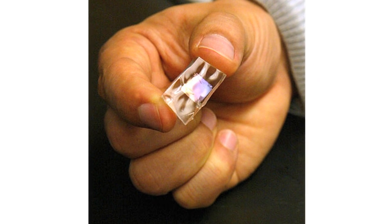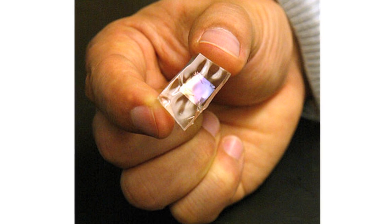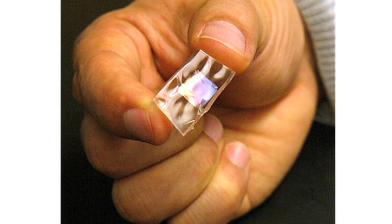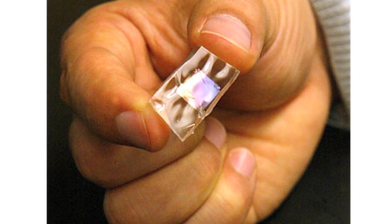We make ribbons using standard microfabrication processes, but the key thing is that the ribbons are nanometer scale thick, so that allows them to flex and stretch in ways that bulk materials would not be able to do. You can think of it as an analog to optical fibers, which are made out of glass, but because they're so thin and long, they can be flexed and stretched very easily.